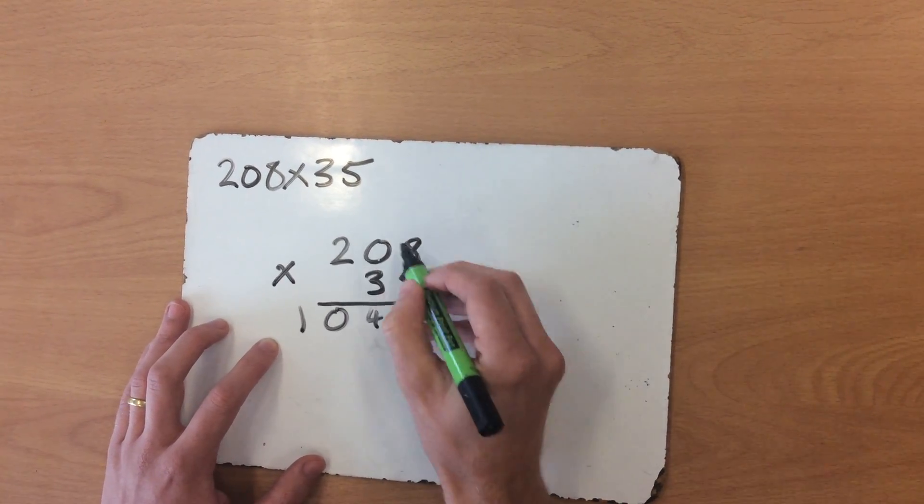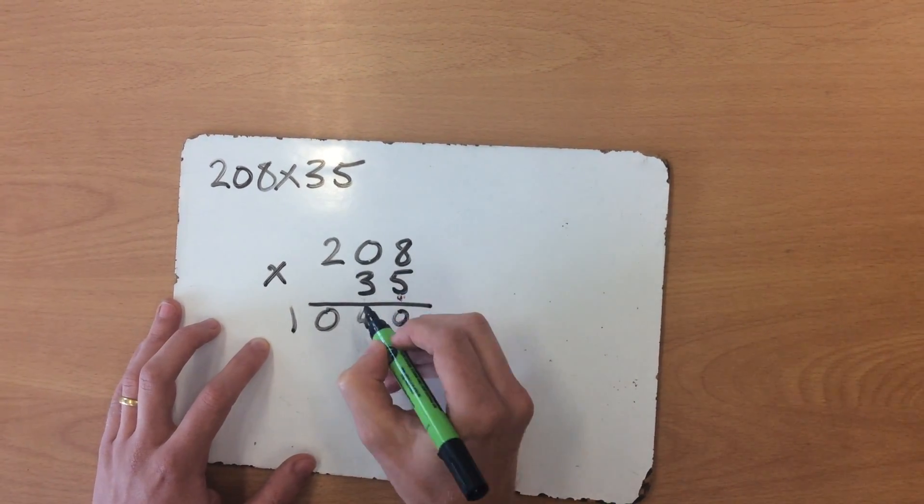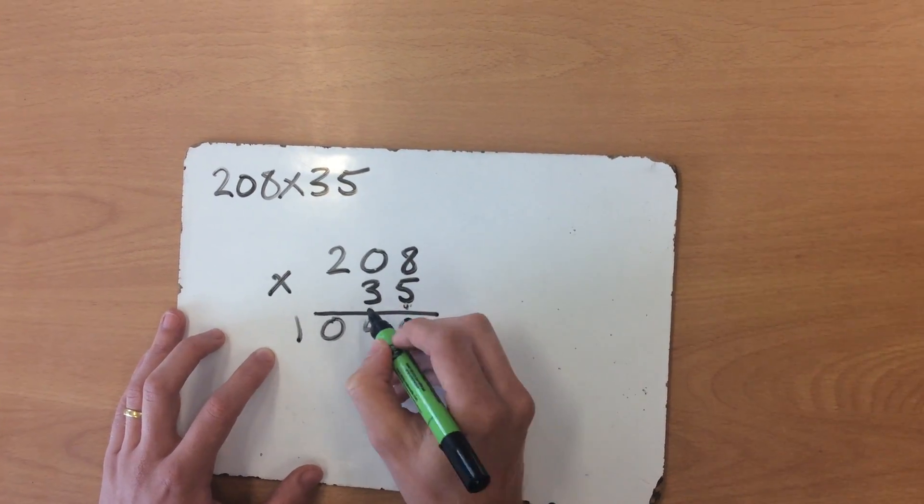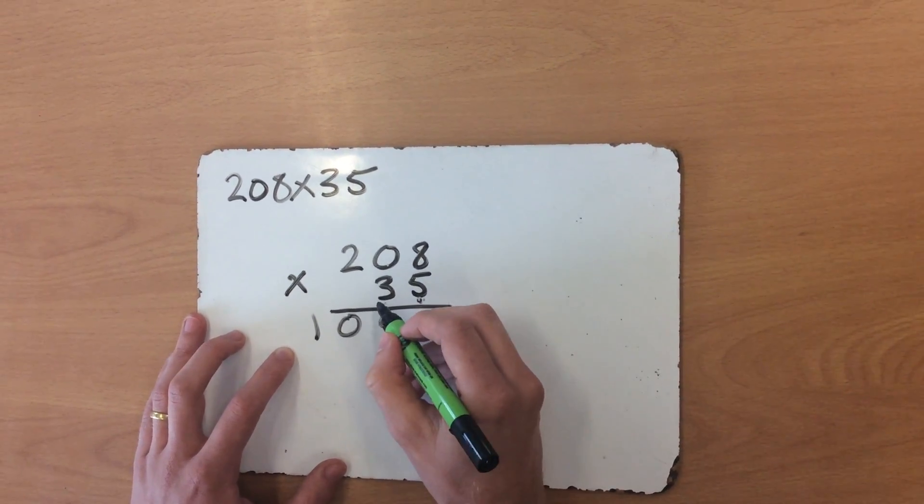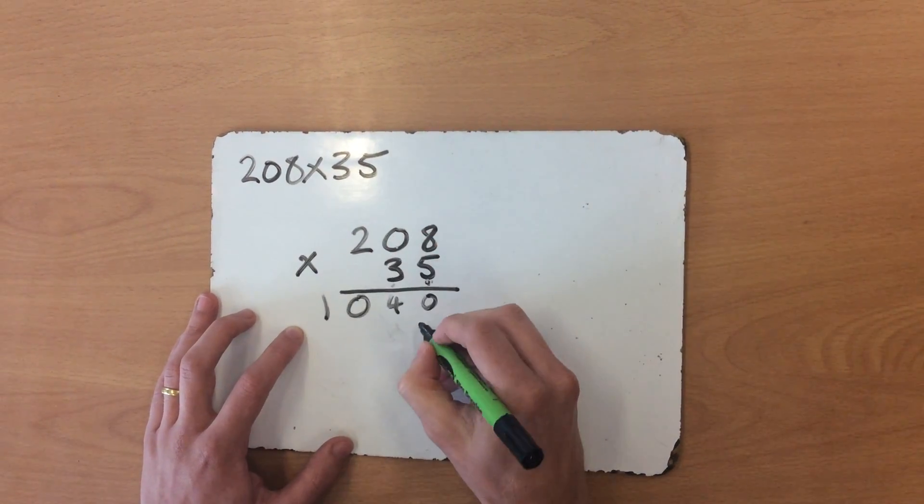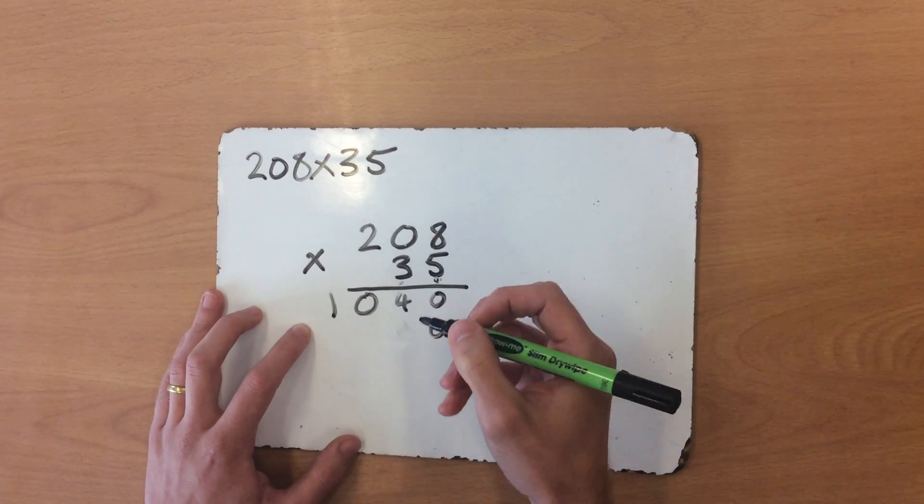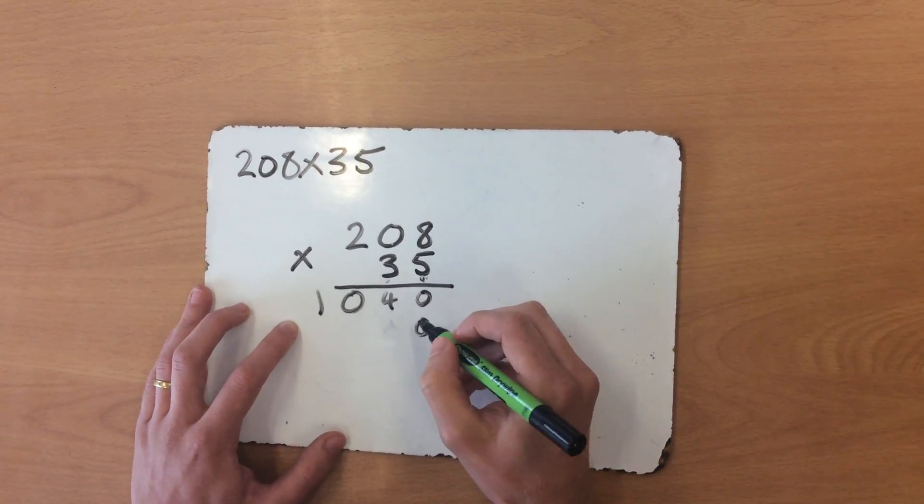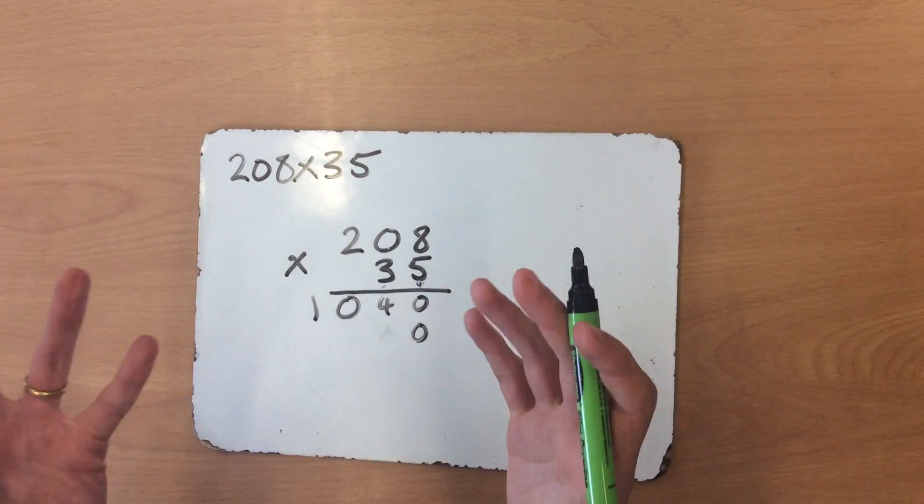Now I've finished with my ones, I'm going to go to my 3, looking at my tens column now. Because this is 3 tens, my answer underneath is going to be 10 times greater, which is why I start my next row with a 0. When I start with a 0, everything is going to be 10 times greater.